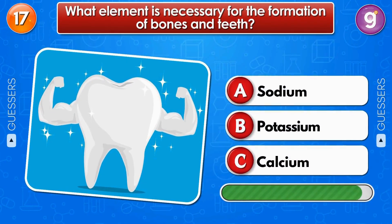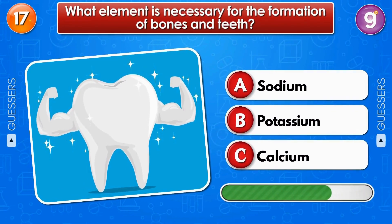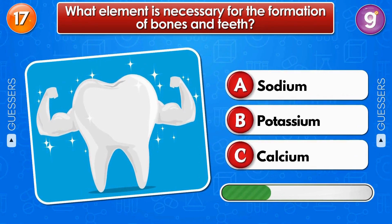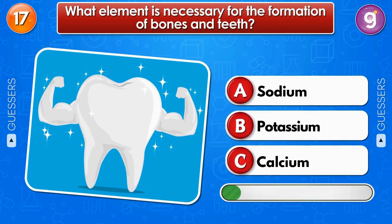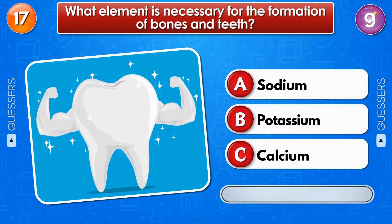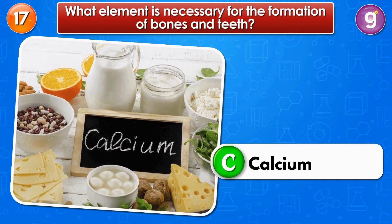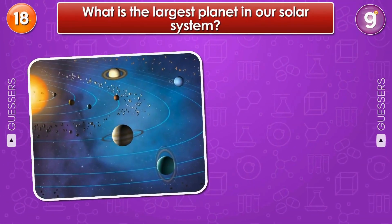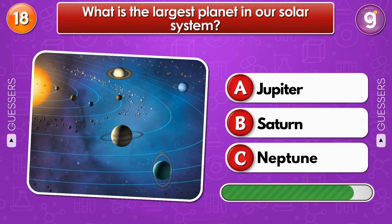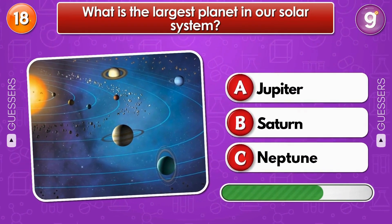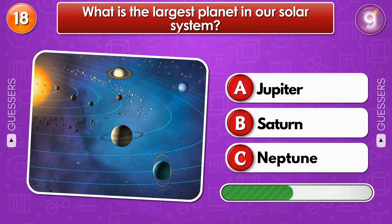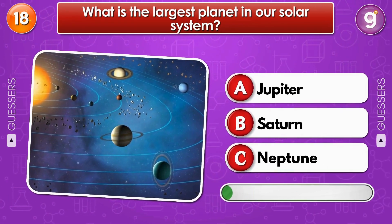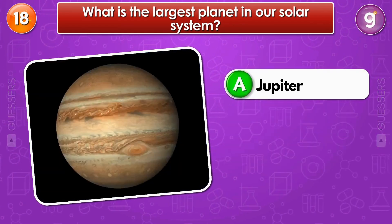What element is necessary for the formation of bones? Calcium. What is the largest planet in our solar system? Jupiter.